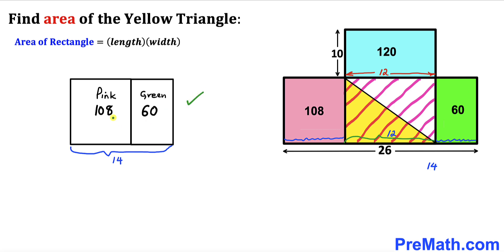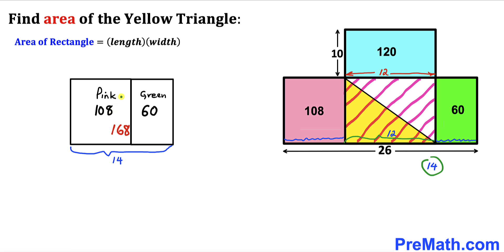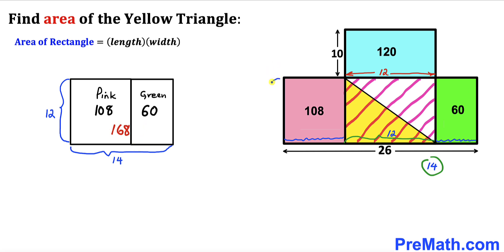I have put together the pink and green rectangles, and their combined side length is 14. The combined area for both rectangles is 108 plus 60, which gives us 168. Applying the area formula with area 168 and side length 14, the other side length has to be 12, because 12 times 14 gives us 168. So this side length is 12 centimeters.